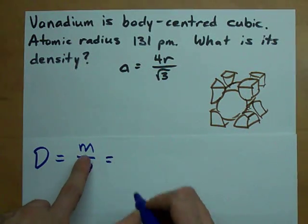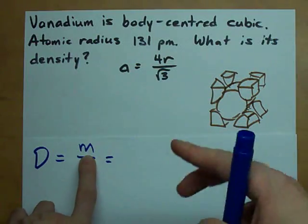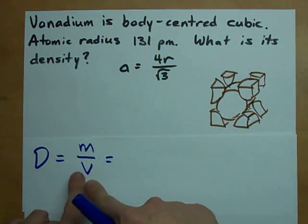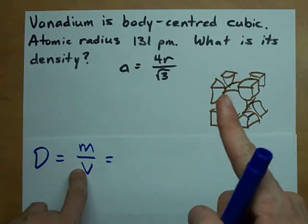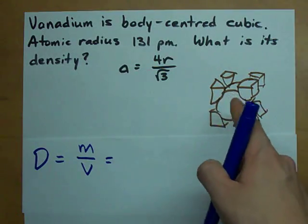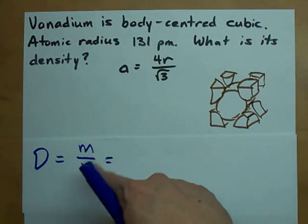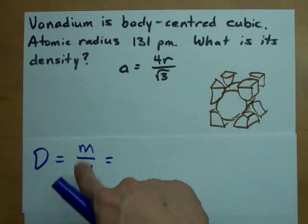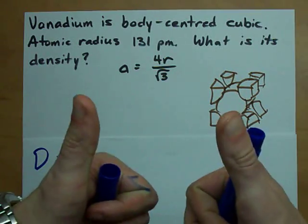If I take this to be the mass of 2 atoms, then I can take this volume to be the volume of one unit cell, because one unit cell contains 2 atoms, and then it's the same basis of comparison for the two, and you're allowed to do that.